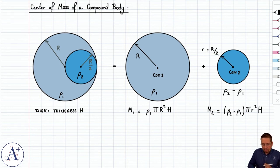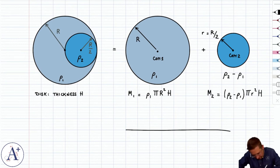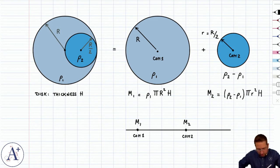But essentially, what we have here is pi R squared times the same thickness H. And now, my problem becomes the following problem. It becomes the problem where I have a center of mass one here associated with the mass m1, and a center of mass two here associated with the mass m2. And if I look at the distance between these two centers of mass in the original distribution, they're separated by a distance little r, which is equal to big R over two.